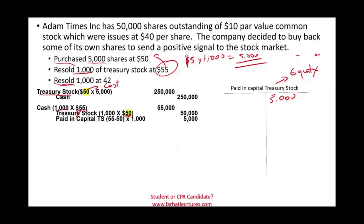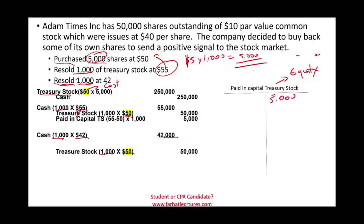Now we resell another 1,000 shares at $42. Note: this cannot be booked as a loss on the income statement — you cannot book a gain or loss from your own stock, as Enron did, and they no longer exist. We received 1,000 times $42, which is $42,000 in cash. We remove treasury stock at cost: 1,000 times $50 is $50,000. Notice we are at a loss of $8,000 because we bought them at $50 and sold at $42.